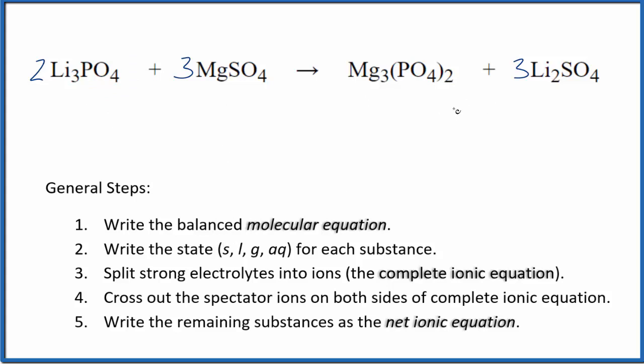Now we have to write the net ionic equation, so we'll write the state for each substance. In general, phosphates are insoluble, but with group one elements like lithium or sodium or potassium, they are going to be soluble.